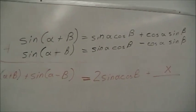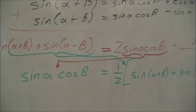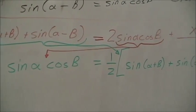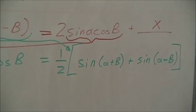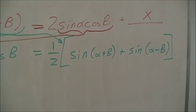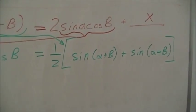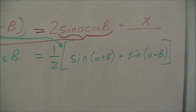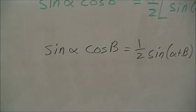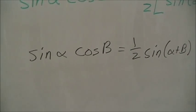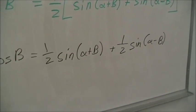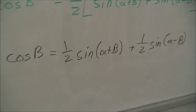We can refine this result by moving the sine alpha cosine beta term to the left-hand side and dividing by two, giving sine(alpha)cos(beta) = one-half sine(alpha+beta) plus one-half sine(alpha-beta). We can further refine this by separating out the (alpha+beta) and (alpha-minus-beta) terms. The final result is sine(alpha)cosine(beta) equals one-half sine(alpha+beta) plus one-half sine(alpha-beta), a result we can directly implement in electronics with the mixer.